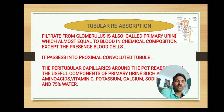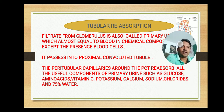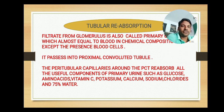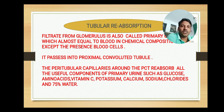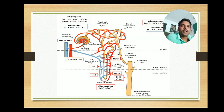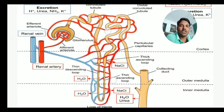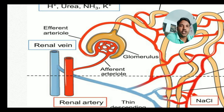Excluding blood cells, the remaining composition of blood equals that of primary urine. It passes into the proximal convoluted tubule, where the peritubular capillaries around the PCT reabsorb the useful components of the primary urine — such as glucose, amino acids, vitamin C, potassium, calcium, sodium, chlorides, and 75% of the water.